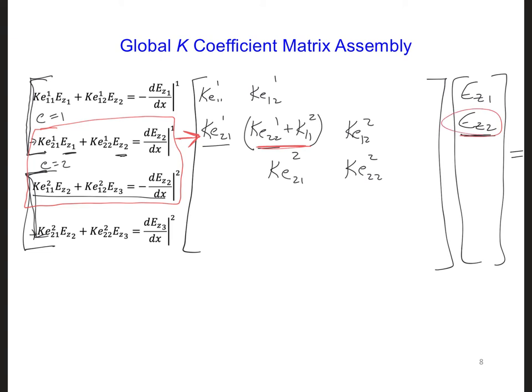Now this third column here is going to be multiplied by Ez 3, so I should make sure to add that. And this keeps going down to Ez N. So we could keep going on and keep adding more Ke terms for the other elements.